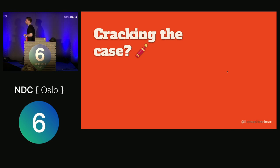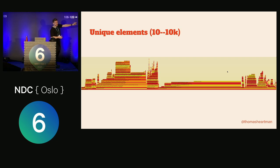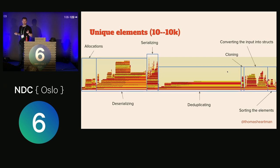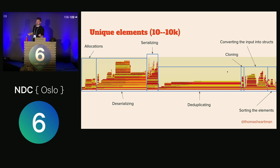Now that we've got the tools and done a bit of bisection and know where we're going — can we crack the case? Here is the flame graph for running with unique elements from 10 to 10,000. I've annotated it to give you a rough view of what's happening. Going from the left: there's a bit of allocation going on — mostly allocating vectors, not that much time. Deserializing takes a surprising amount of time, about 20% or so. Serializing does not take as long. But deduplication — that's a big one, roughly half the time.